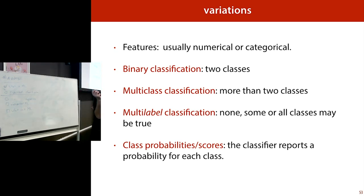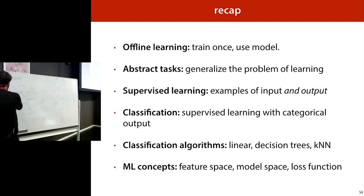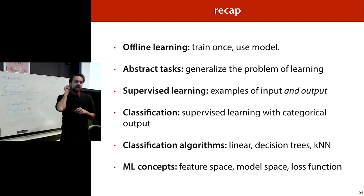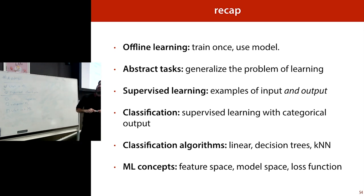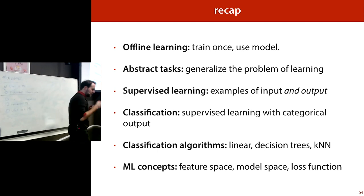So that's three ways of doing classification. A couple of exceptions worth noting: there are also categorical features like hair color and eye color — usually features are either categories or numbers. Binary classification is the nicest case with two classes, but you can have multi-class classification like the digit example with ten classes. There's also multi-label classification where none, some, or all classes might be true — we won't cover that much. Most classifiers can also output a probability distribution or score over classes rather than just a single class, and we'll talk about that in the next week.